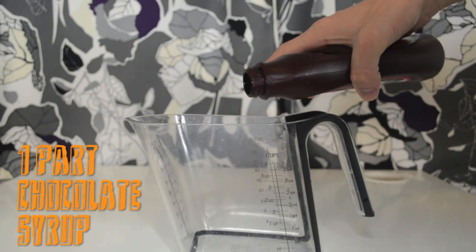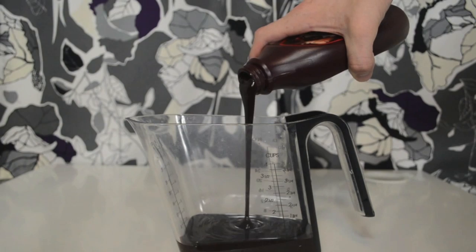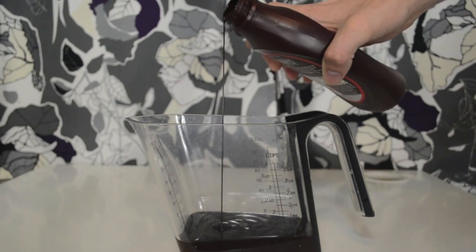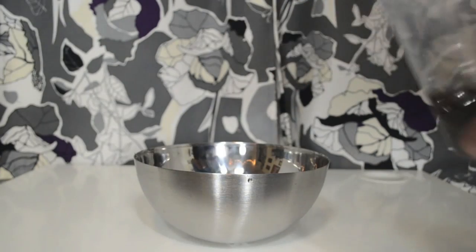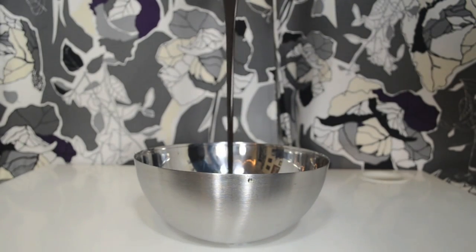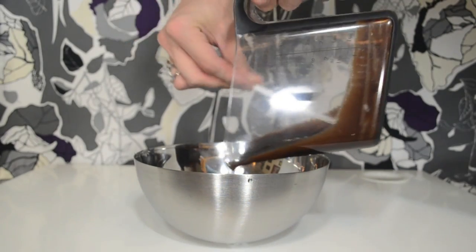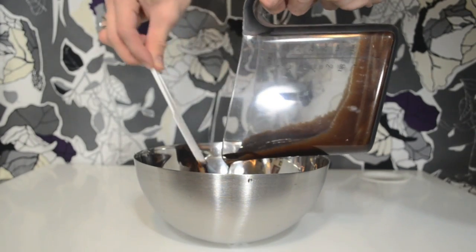And then measure out one part of chocolate syrup. So that's one cup for me. And pour that into the bowl too. You might want a spatula to scrape it out because it will stick to the sides.